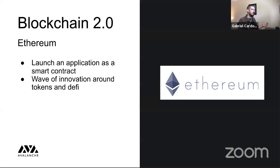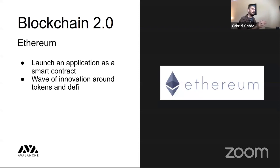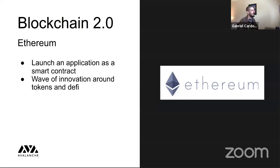Blockchain 2.0 is Ethereum. Ethereum is a decentralized application that allows other decentralized applications to launch on top of it as smart contracts. Before Ethereum, if you wanted to launch your own smart contract or decentralized app, you had to spin up your own network — leading to a bespoke environment where none of these networks could get the network effects needed to go mainstream. Ethereum changed that, leading to a huge wave of innovation around tokens, ICOs, DeFi, and oracles.